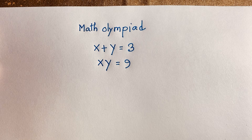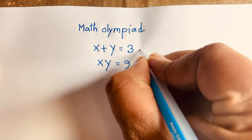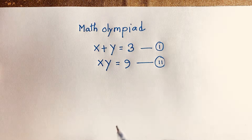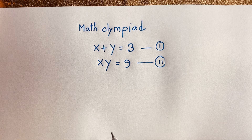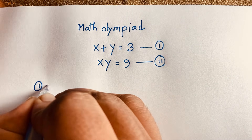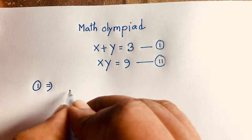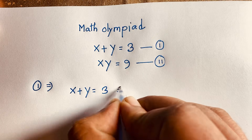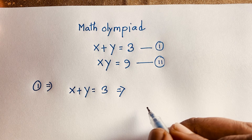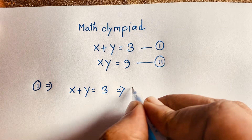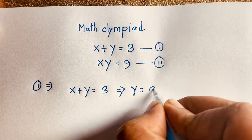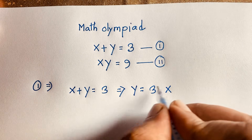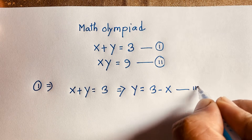So, how do we solve this question? This is our first equation and this is our second equation. Taking our first equation, x plus y is equal to 3, I can rearrange to get y is equal to 3 minus x — just moving x to the other side, making it negative x. This is our third equation.